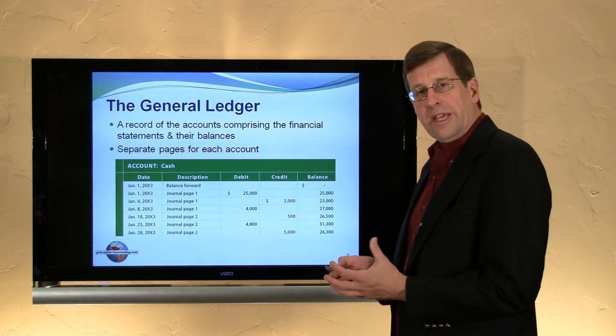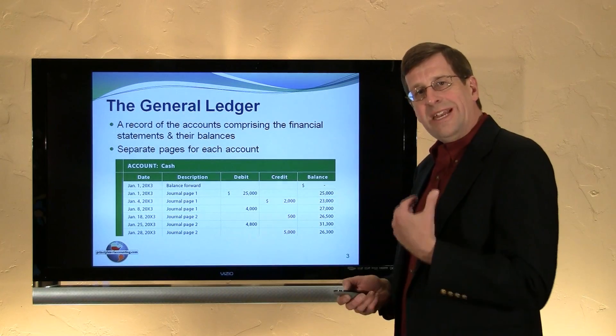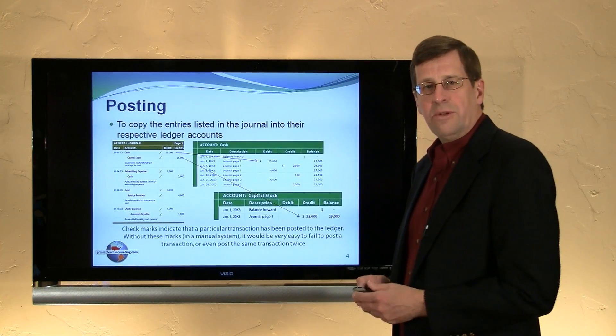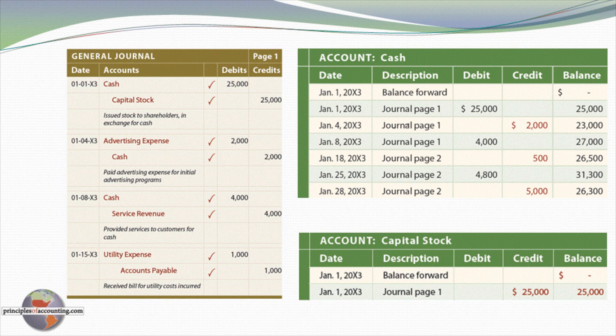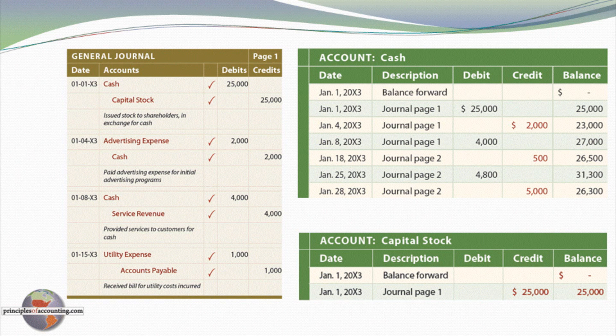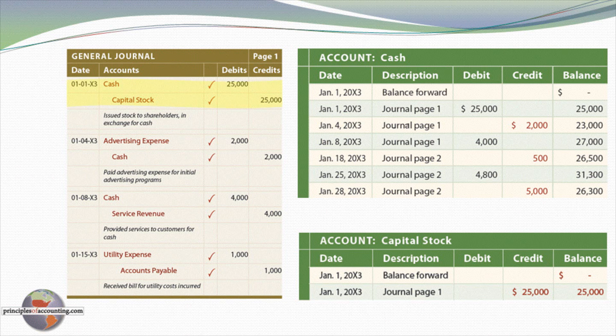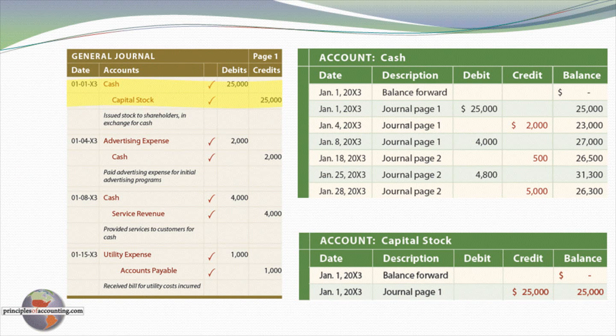Now, that's the general ledger account. But to make this make sense, we need to think back again to our general journal. On the left-hand side of the next slide, we see a general journal. Remember the definition of the journal: a chronological listing of the transactions of the business in their debit credit form. So here I'm showing a page from the journal, and the very first transaction reflects that we issued stock to shareholders in exchange for cash.